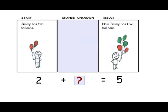We can explore the same scenario where the change is unknown. Jimmy has two balloons. Sally gave him some more balloons, and now he has five balloons. The unknown change answers the question, how many balloons did Sally give Jimmy?